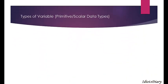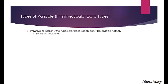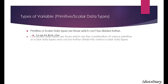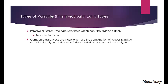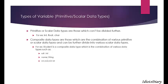Next, we will discuss about types of variables. Primitive or scalar data types are those which cannot be divided further — for example, integer, float, and character. Composite data types are those which can be divided further and are a combination of various primitive data types. For example, a 'student' data type could combine roll number (integer), name (string), marks 1/2/3 (integer), and percentage (float) — so 'student' is a composite data type.